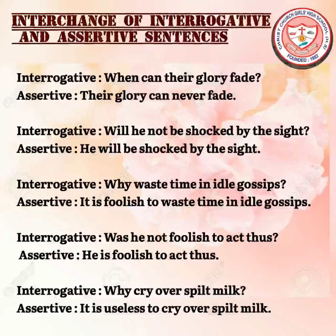Interchange of interrogative and assertive sentences: questions asked to suggest the answer the speaker expects can be transformed into statements — assertive sentences. Affirmative questions are transformed into negative statements, and negative questions are transformed into affirmative sentences. Example — interrogative: 'When can their glory fade?' Assertive: 'Their glory can never fade.'